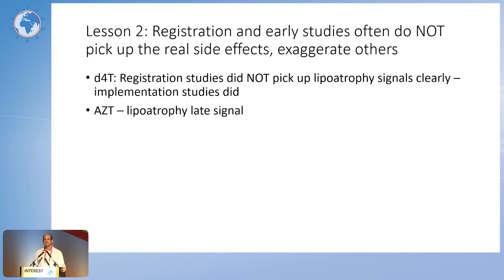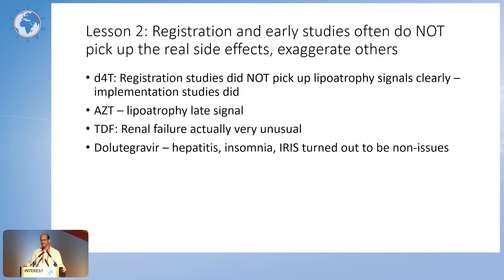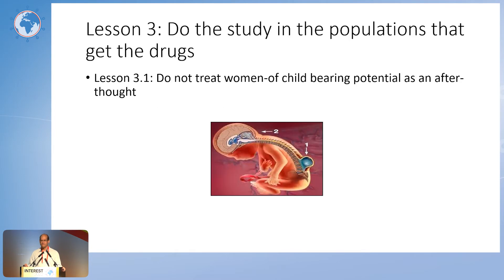AZT — it took ages to see the lipoatrophy. Now we know it's a really toxic drug, and most of us are more worried about AZT lipoatrophy than the gastrointestinal and anemia side effects, which are actually predictable and manageable. Tenofovir — everyone worried about renal failure, but it's actually really unusual, particularly in young people, and it didn't transpire as much as feared. Dolutegravir — all those side effects that were worried about: hepatitis, insomnia, IRIS — they all turned out to be non-issues. Now we need to see if this diabetes concern is actually something to worry about.